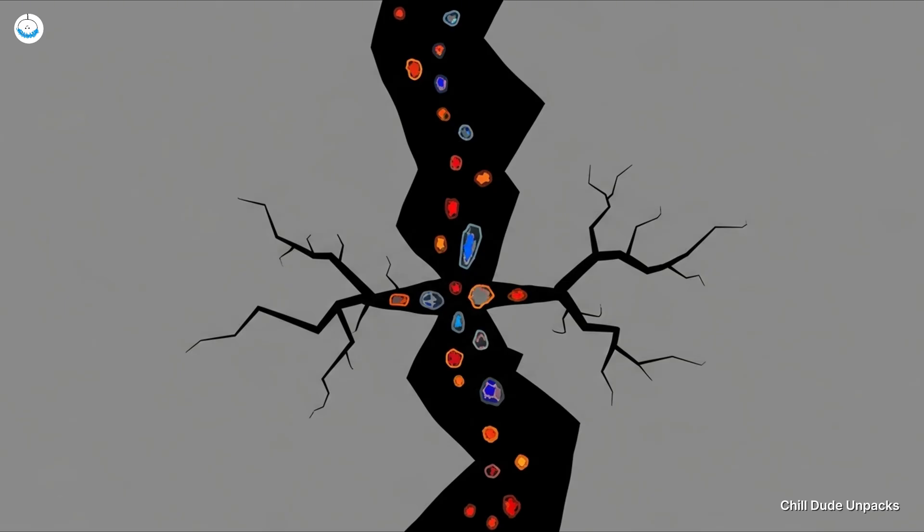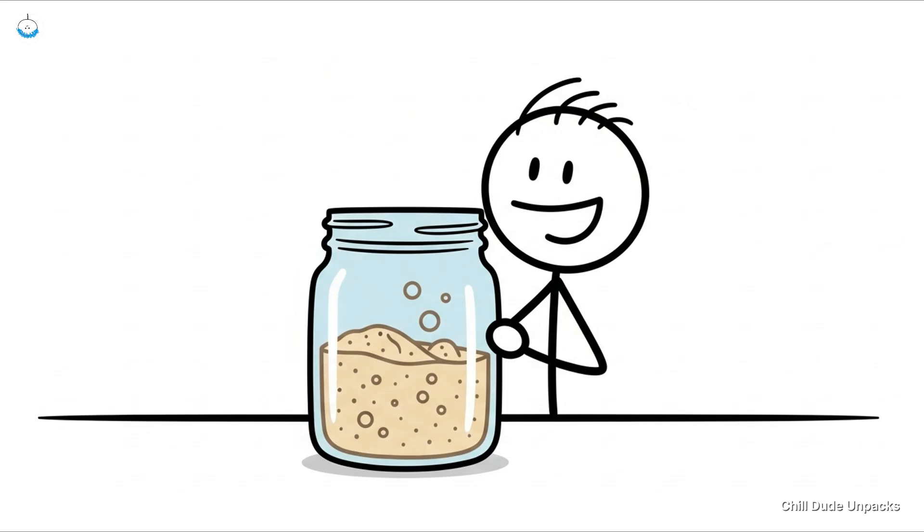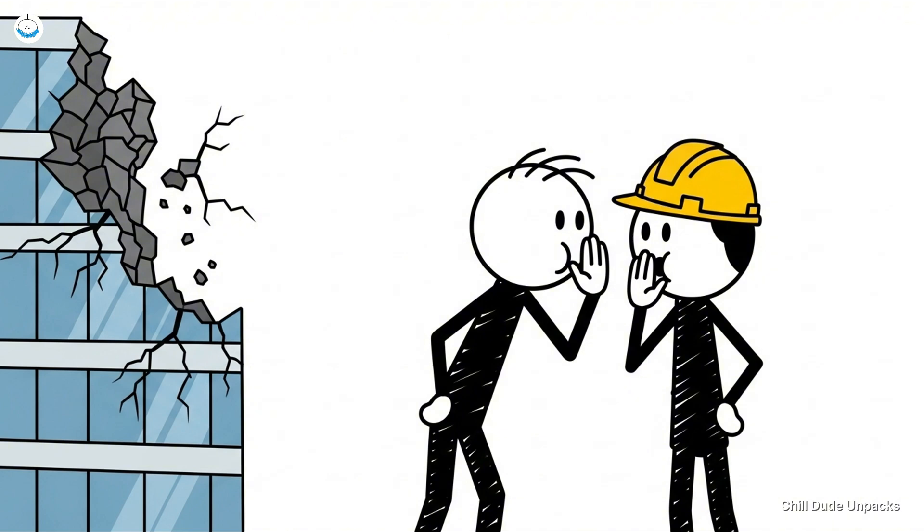The secret: those volcanic minerals react with water over time, sealing the gaps. It's basically the sourdough starter of building materials—keep it alive and it keeps giving back. So next time you walk past a crumbling building, maybe whisper to the architect, 'Psst! Have you tried going full Roman?'